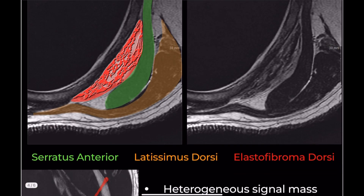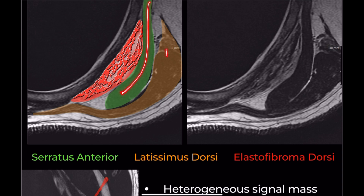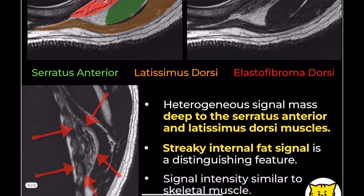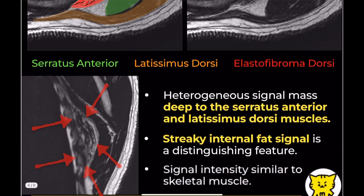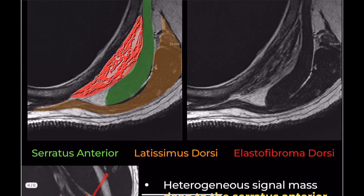Here's another patient with a similar mass just inferior to the scapula, in the classic location, deep to the serratus anterior and latissimus dorsi muscles. Again, the lesion, marked in red, is relatively well defined but lacks a true capsule.